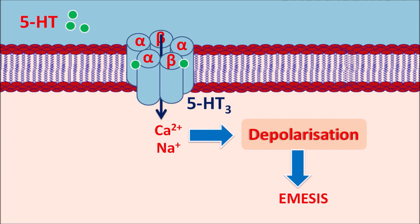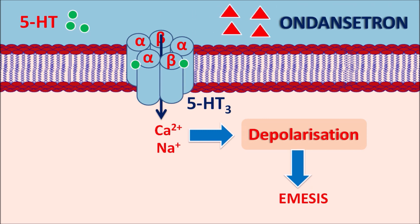Ondansetron is a drug that can selectively act on the 5-HT3 receptors. It binds to the ionophoric site on the 5-HT3 receptors, thereby inhibiting the activity of these receptors. In the presence of Ondansetron, the emesis stimulated by 5-HT released from the enterochromaffin cells — due to anti-cancer agents like cisplatin — can be prevented. In this way, Ondansetron inhibits cisplatin-induced nausea and vomiting.